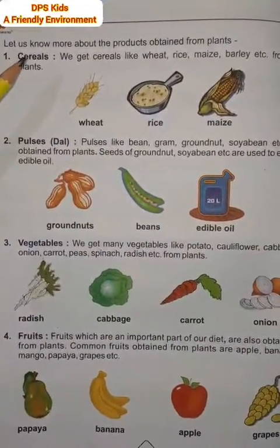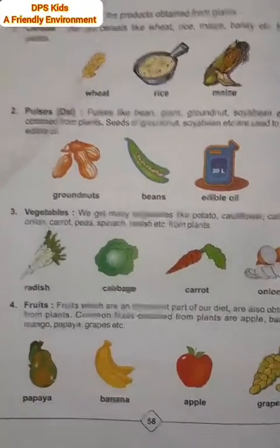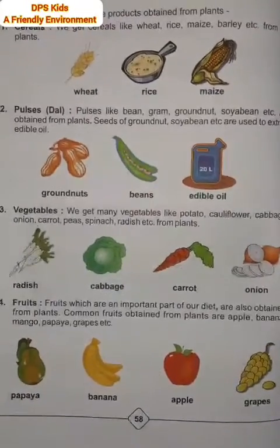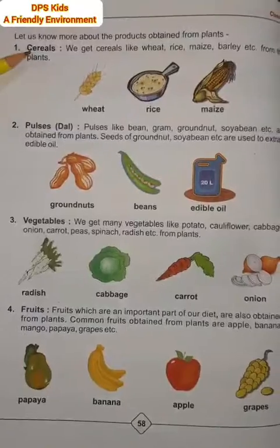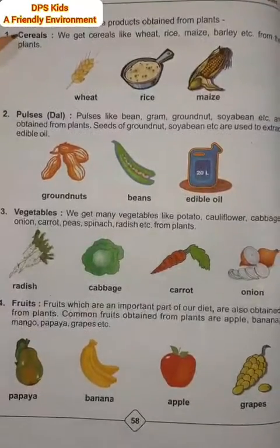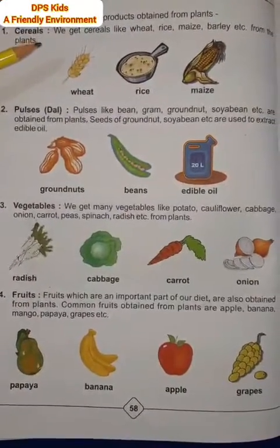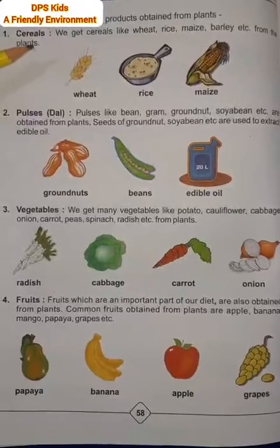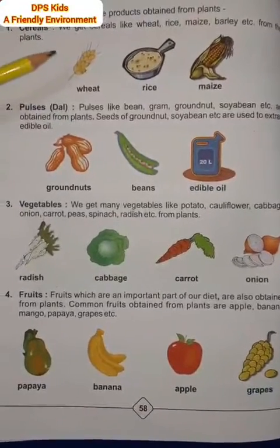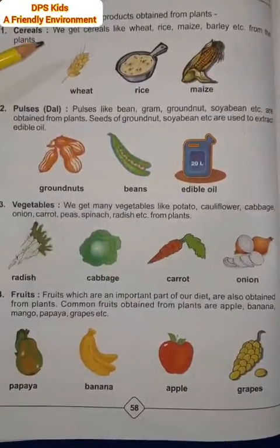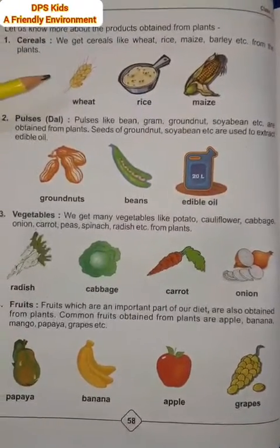Let us know about the products obtained from plants। Cereals यानि अनाज — we get cereals like wheat, rice, maize, barley, etc. from plants। हम जो भी अनाज खाते हैं जैसे गेहूँ, चावल, मक्का, जौ, etc., यह सब हमें plants से ही मिलते हैं।